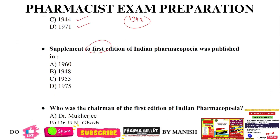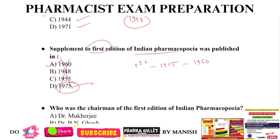Next question: supplement to the first edition of Indian Pharmacopeia was published in? We already discussed it many times. The first edition was published in 1955, and the supplement to the first edition was published in 1960 — option A. The supplement to the second edition of IP was published in 1975, and the second edition was published in 1966.